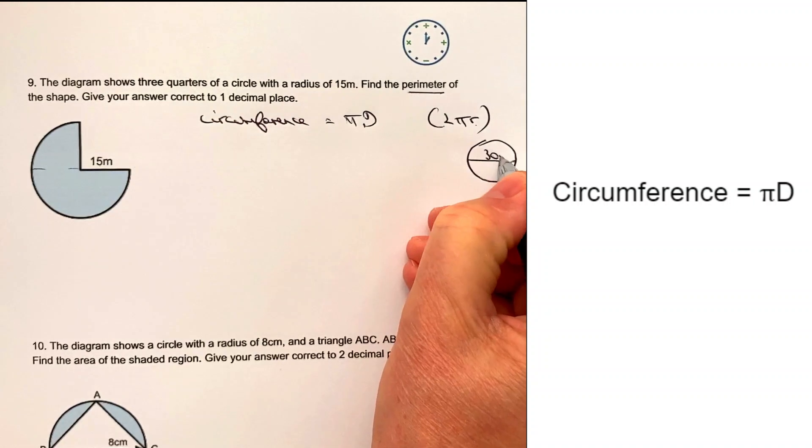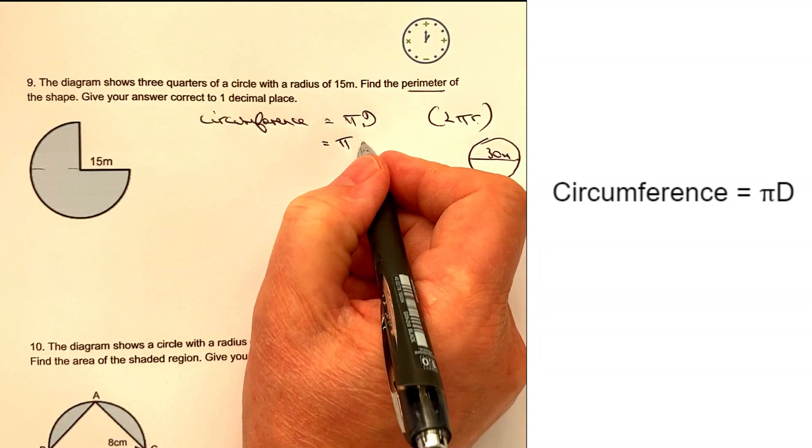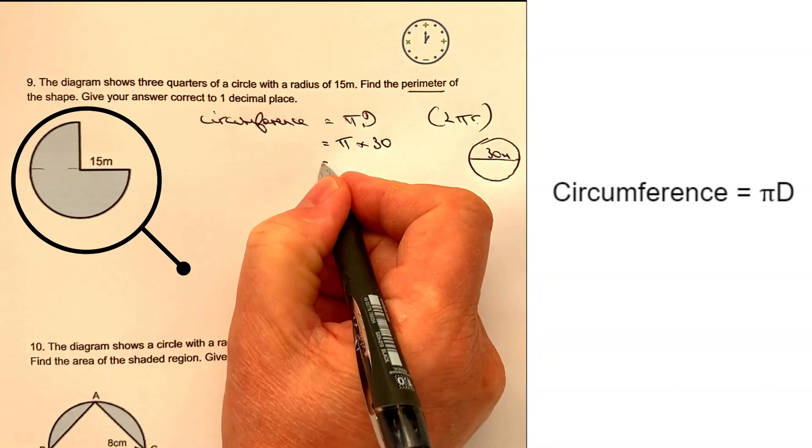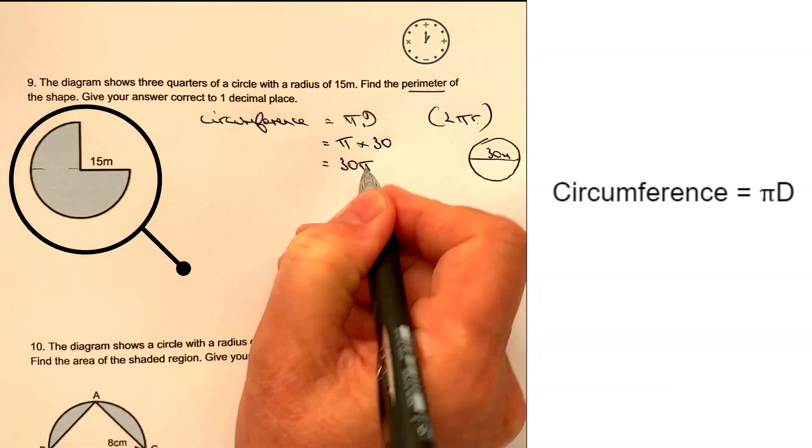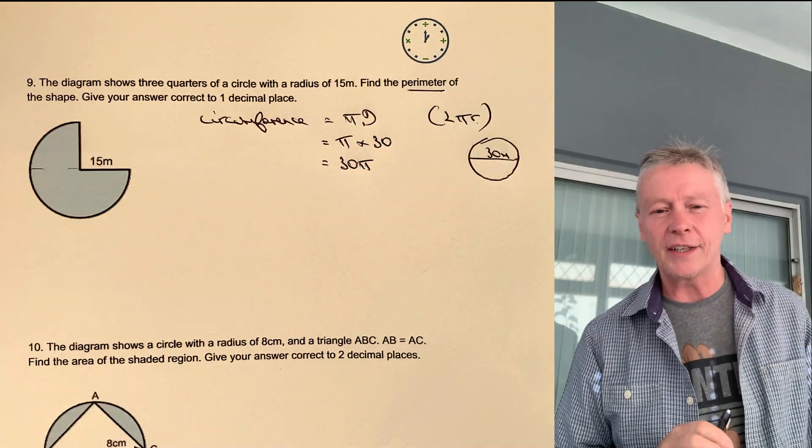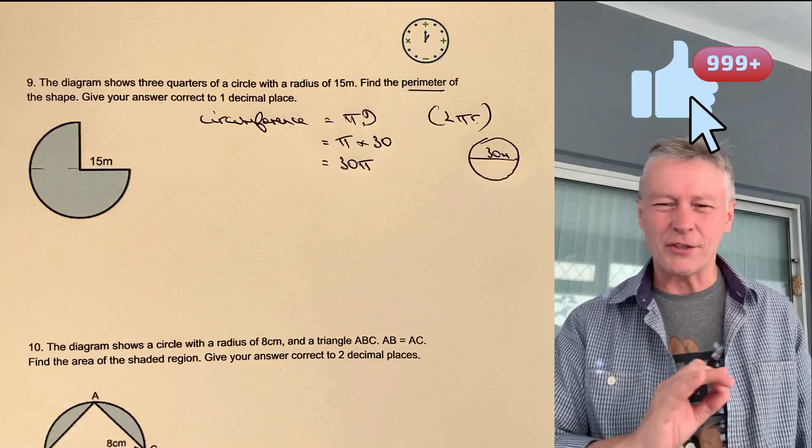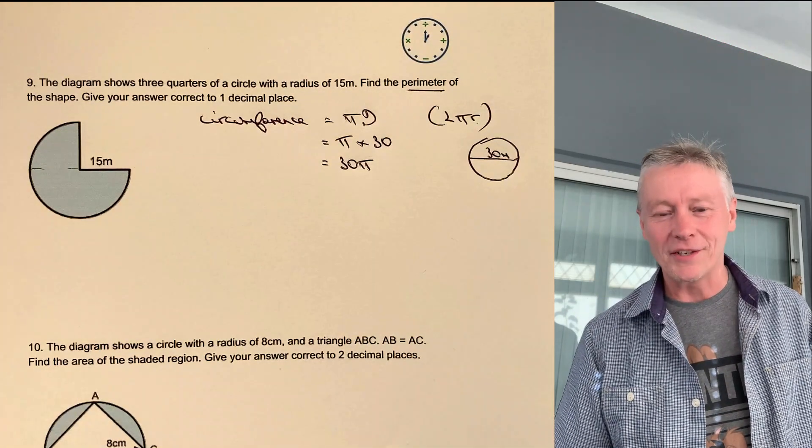So I can use that information and I can work out the circumference of the circle as π times 30, which I'm just going to leave as 30π. Now, that's because it's the whole circle, and it's just much easier just to leave it in terms of π rather than actually calculating and having to write a whole load of decimal places.